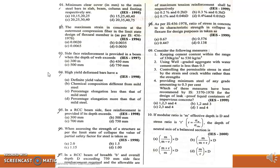Moving to second question: The maximum strain in concrete at the outermost compressible fiber in the limit state design of flexural members is? Options are 0.0020, 0.0035, 0.0065, and 0.0050. The correct answer is option B, 0.0035 as per IS 456-2000.